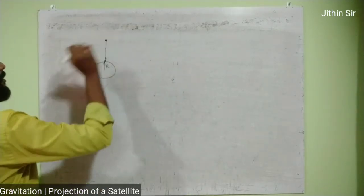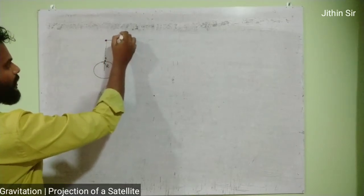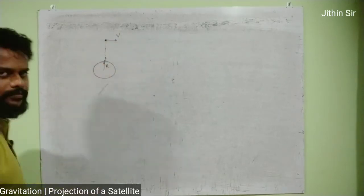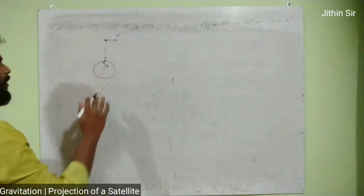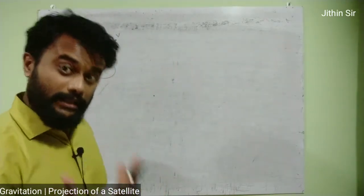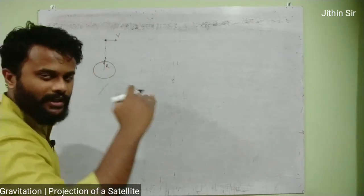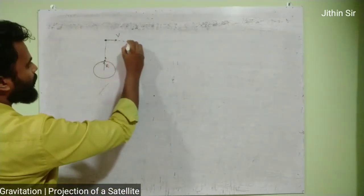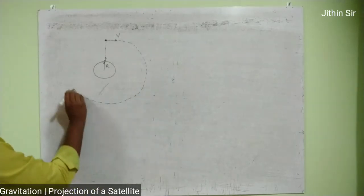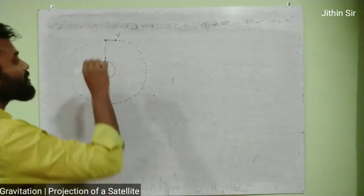We give the satellite a certain velocity in the forward direction. Due to this velocity, the satellite is launched. When this velocity is the appropriate (apt) velocity, then the satellite performs circular motion around the earth.